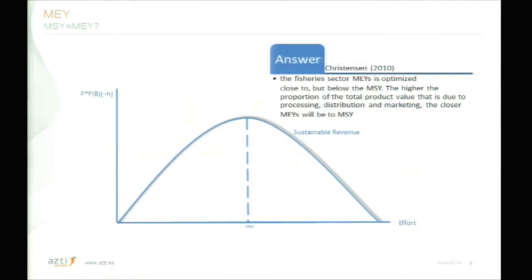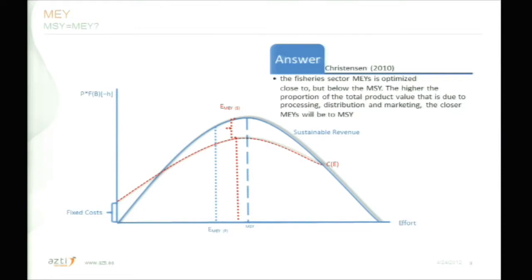Looking from the biomass point of view, the biomass is well below the MSY and the maximum economic yield situation. Christensen's answer is that the fishery sector's MEY is optimized close to but below the MSY. The higher the proportion of total product value that is due to processing, distribution, and marketing, the closer MEY will be to MSY. So, if you include all the costs and values from processing, distribution, and marketing, the MEY will be closer to MSY, as you can see in this graph.